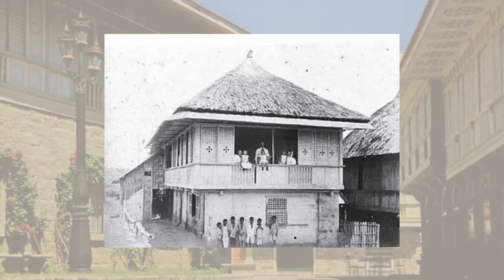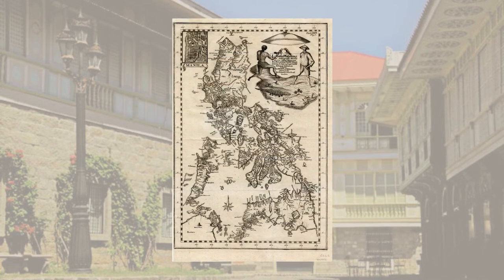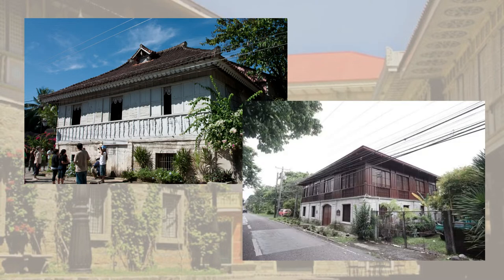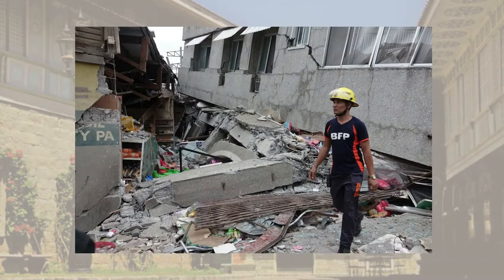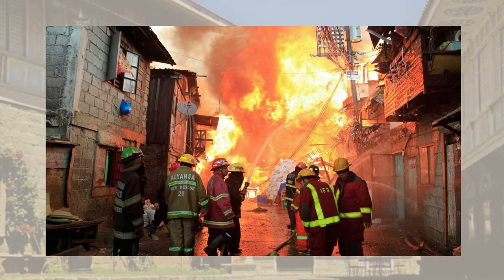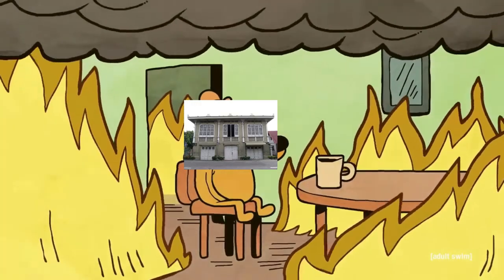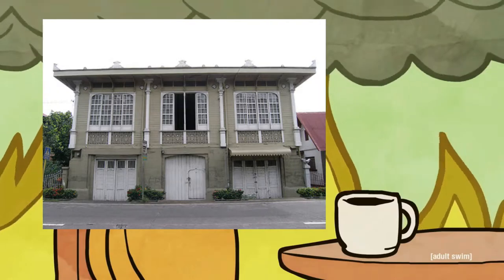Bahay na Bato is a Spanish derivation of Bahay Kubo, as obviously the Kingdom of Spain colonized the Philippines. From Bahay Kubo, Bahay na Bato evolved from a series of events rather than a single progenitor event. These events are calamities such as earthquakes, typhoons, and fires that struck the nation, which are the reasons why the materials and methods of construction were changed.